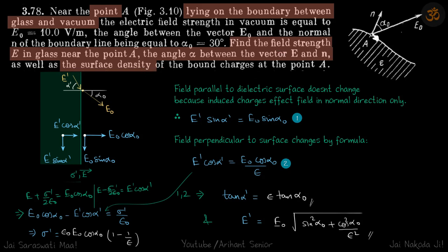The surface charge density is what causes the change in field. The surface charge density is normal to the surface, so it causes a jump in the electric field. If the electric field inside is E, then just outside the field is E plus sigma by epsilon. The surface charge will only change the normal component of the field. The parallel component of the field is not affected by the surface charge, because the field generated by surface charge is in the direction of the normal.